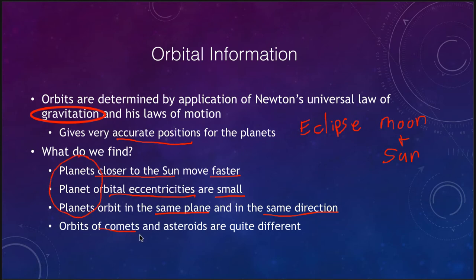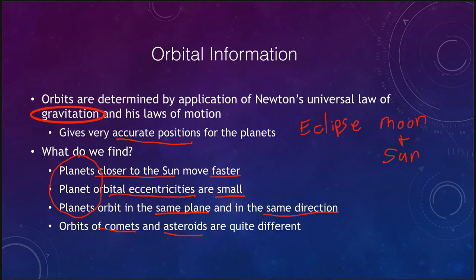When we talk about comets and asteroids, they're quite different. Comets and asteroids can have very eccentric, more elliptical orbits. Comets can come in very close to the Sun and move very far away — their closest approach could be inside Earth's orbit and their furthest could be out beyond Neptune. Comets and asteroids do not necessarily orbit in the same plane or even in the same direction as the planets.